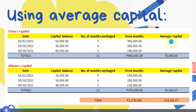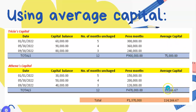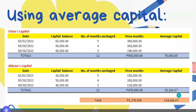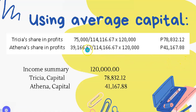Now we're going to use the average capitals of 75,000 and 39,166.67 as the numerators, and 114,166.67 as their denominator. So as stated, 75,000 over 114,166.67 times 120,000 will give Terra's share in profit.